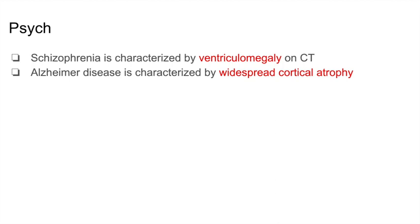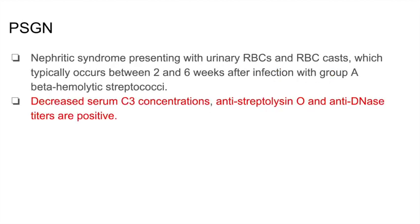Now let's take a closer look at post-strep glomerulonephritis. One way they love to test this topic is by assessing hypersensitivity reactions — this is a type 3 hypersensitivity reaction. It is a nephritic syndrome where patients will have red blood cells in their urine as well as red blood cell casts. These patients typically present 2 to 6 weeks after a group A beta-hemolytic streptococci infection. You'll also note decreased serum C3 concentrations — this is extremely high yield.